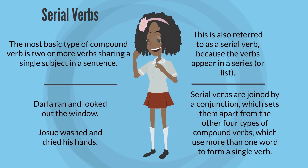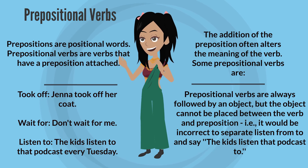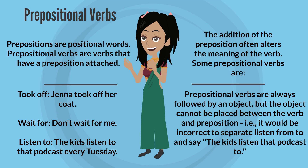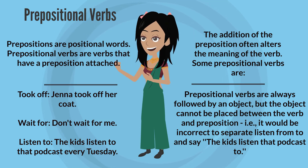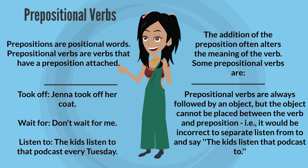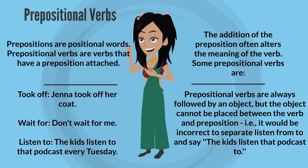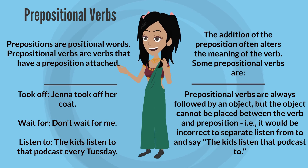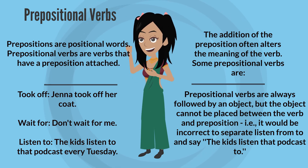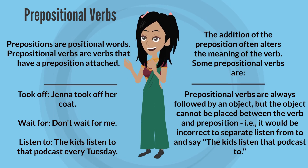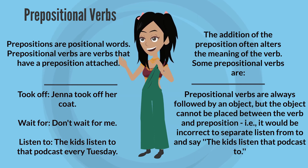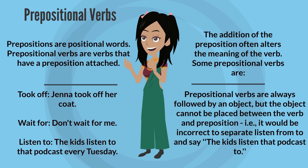Serial verbs are joined by a conjunction, which sets them apart from the other four types of compound verbs that use more than one word to form a single verb. Prepositional verbs are verbs that have a preposition attached; the addition of the preposition often alters the meaning of the verb. Examples: 'took off' ('Jenna took off her coat'), 'wait for' ('Don't wait for me'), 'listen to' ('The kids listen to that podcast every Tuesday'). Prepositional verbs are always followed by an object, but the object cannot be placed between the verb and preposition.